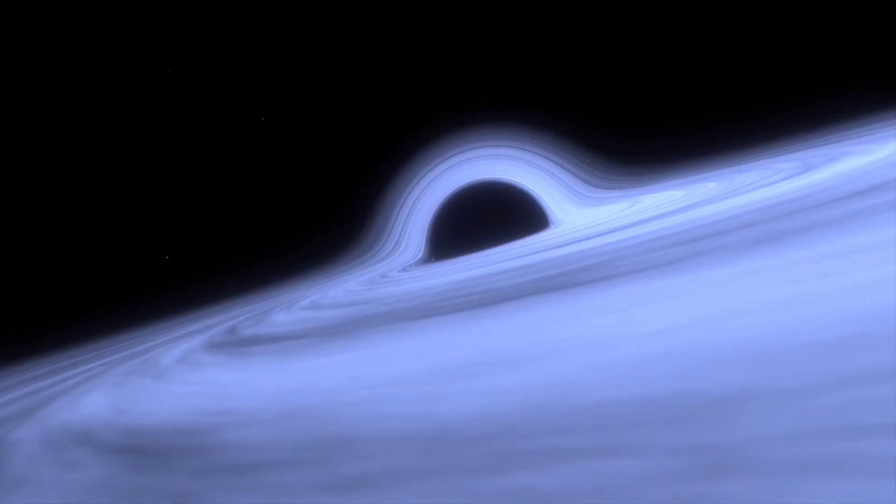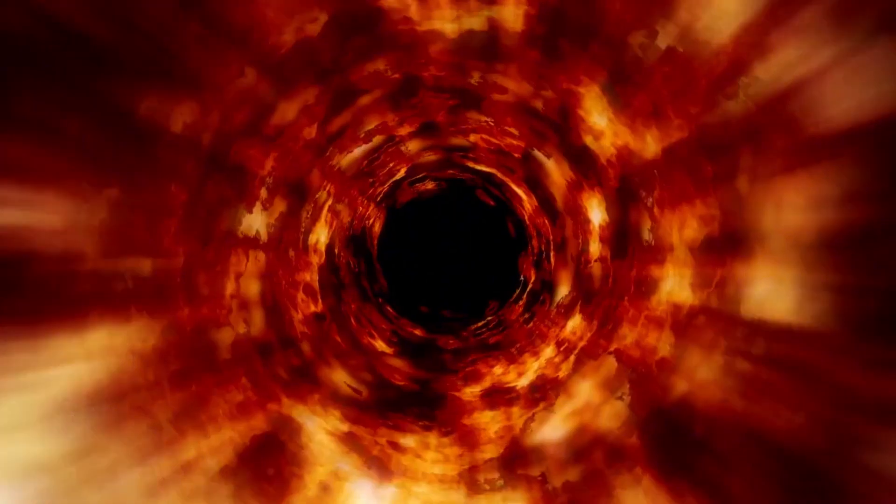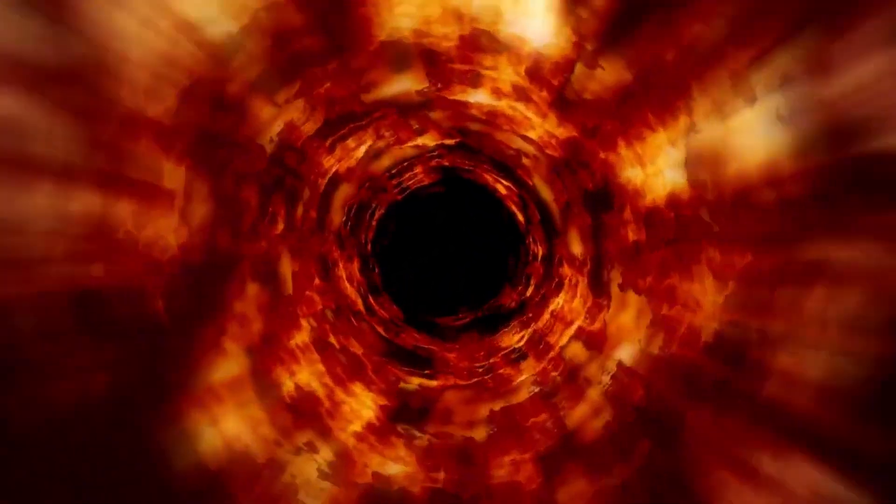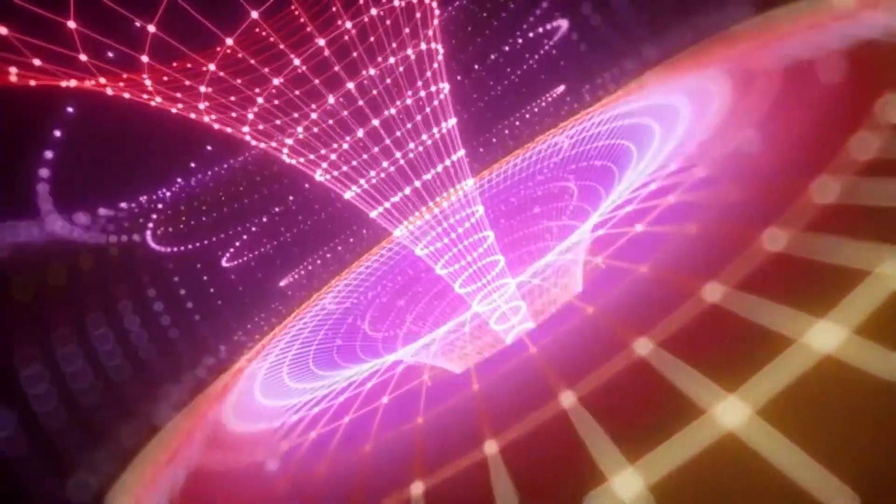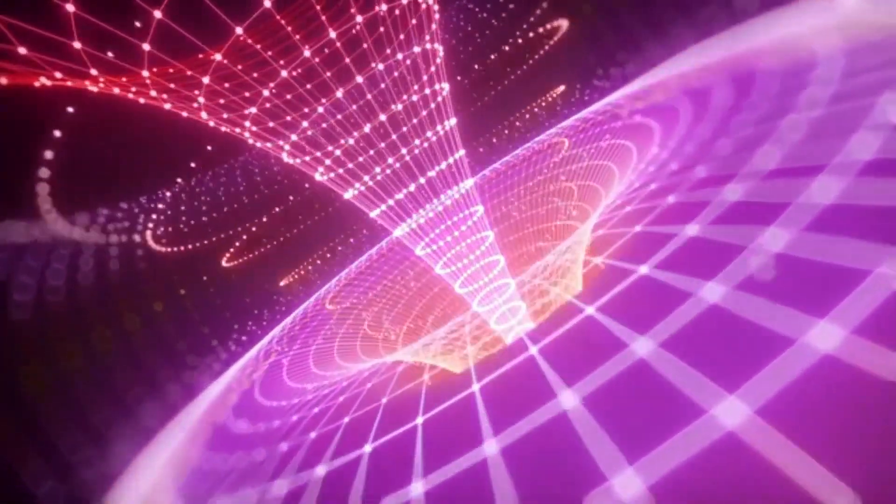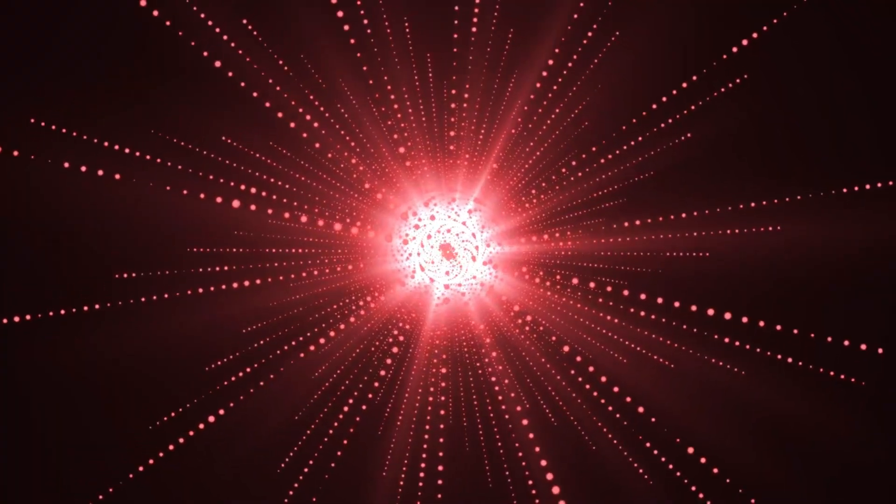The second layer, known as the photon sphere, is where light itself gets trapped, unable to escape due to the powerful gravitational forces at play. Finally, there is the singularity where all matter is compressed into an infinitely small point, a place where the very fabric of reality collapses, and all known laws of physics break down.